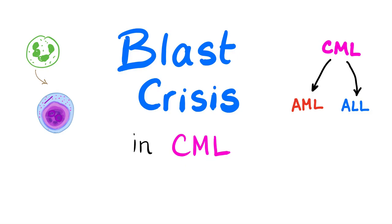As you know, chronic myeloid leukemia is a chronic leukemia, which means the cells are more mature, such as the neutrophil. But in the blast crisis, there is transformation into the blast phase, which is an earlier, more immature stage, such as these blasts. That's why blast phase in CML behaves exactly as in acute leukemia, which is not fun.